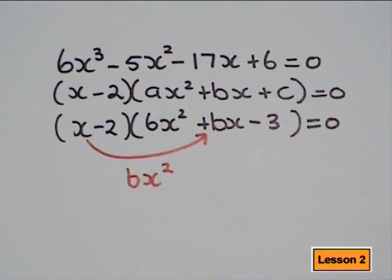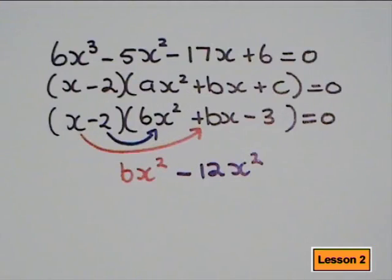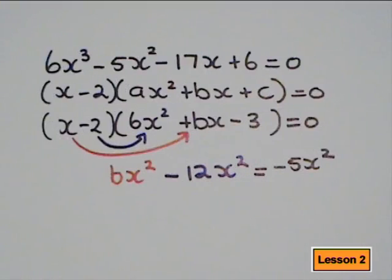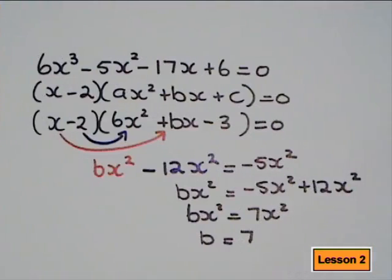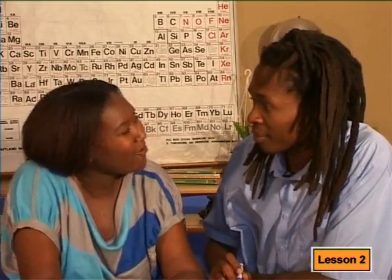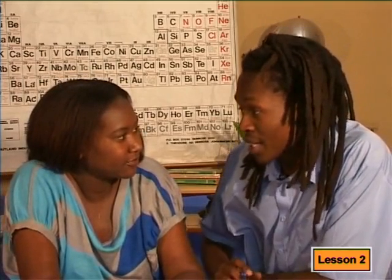To find b, I multiply the first term in the first bracket with the second term of the second bracket, which gives me bx squared. Then I multiply the second term of the first bracket by the first term in the second bracket, giving negative 12x squared. If I collect these, they must give me negative 5x squared. So if I solve the equation, I get that b must be 7. Good, Debuhu. What do you need to do now?